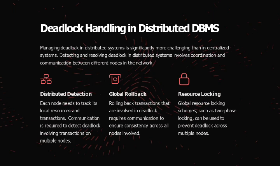Managing deadlock in distributed systems is significantly more challenging than in centralized systems. Detecting and resolving deadlock in distributed systems involves coordination and communication between different nodes in the network. For distributed detection, each node needs to track its local resources and transactions, and communication is required to detect deadlocks involving transactions on multiple nodes. Global rollback requires communication to ensure consistency across all nodes. Global resource locking schemes such as two-phase locking can be used to prevent deadlock across multiple nodes.